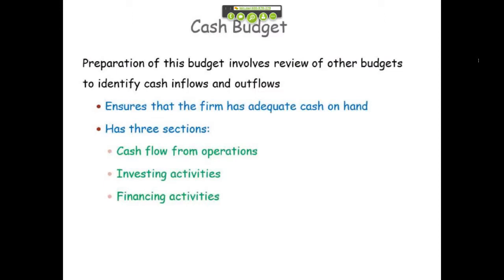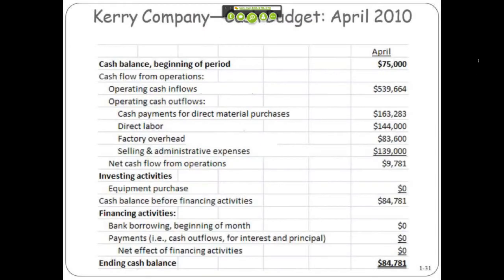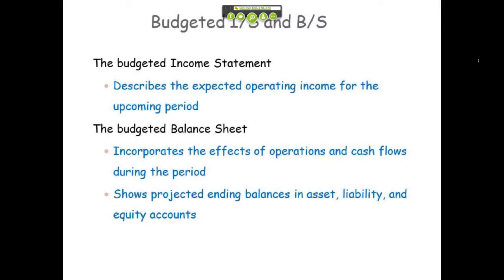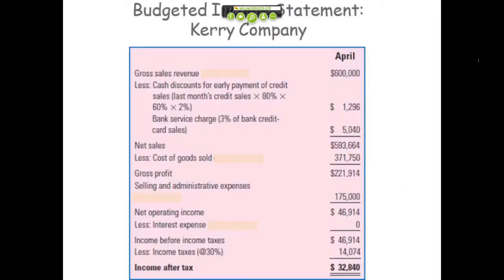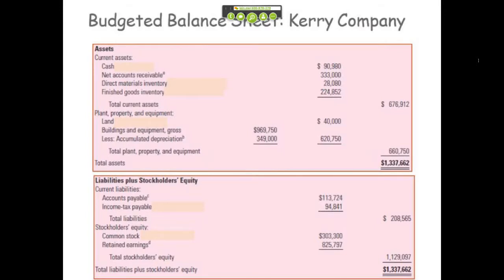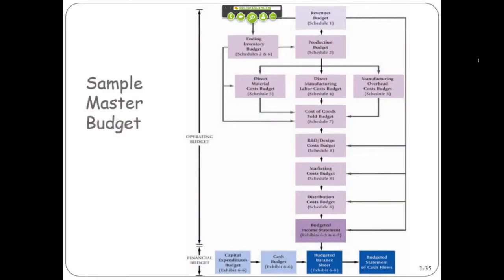Now you can do a statement of cash flows — you've seen these already along the way — with the divide of cash flows from operations, investing, and financing, and it'll look something like this, with that number being your operating cash inflows. So you've done a pro forma statement of cash flows. And now you can do pro forma income statements and balance sheets — just taking numbers that you've already created and adding them to or subtracting them from your starting position on the balance sheet. This is just a summary of the process.